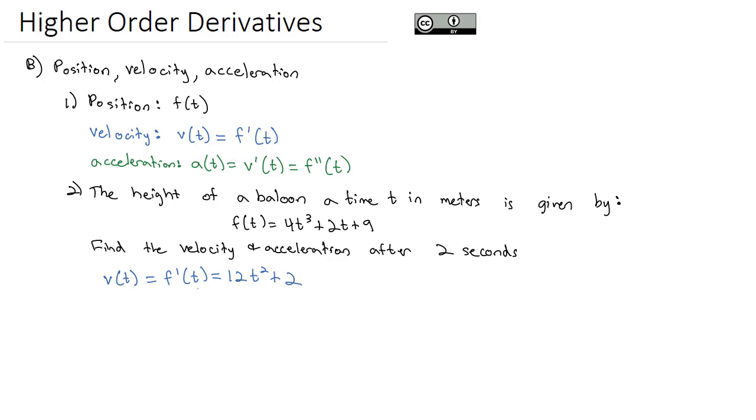We know the time is going to be 2 seconds. So we'll find the velocity at 2 seconds is 12 times 2 squared plus 2, or 12 times 4 plus 2, which is 48 plus 2. The velocity is 50, and it turns out that is meters per second. This balloon is moving at 50 meters per second after 2 seconds.